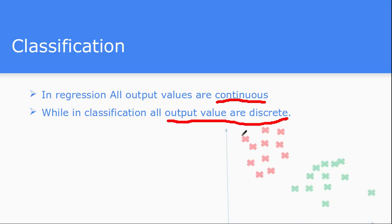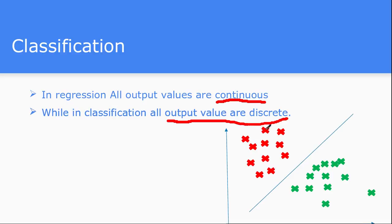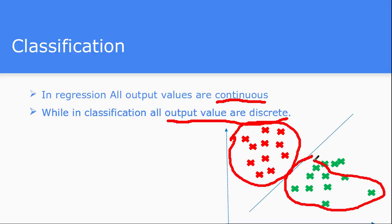Let's understand with a simple example. Looking at this data uploaded into a two-dimensional graph: in the regression case, the output was continuous, but here the classification algorithm tries to find the boundary between classes of data. One class of data lies in one group and another class lies in the second group. Whenever a new example is given, it classifies it into one of these groups. There are only a fixed number of output values — no continuous values. That is the only difference between regression and classification.